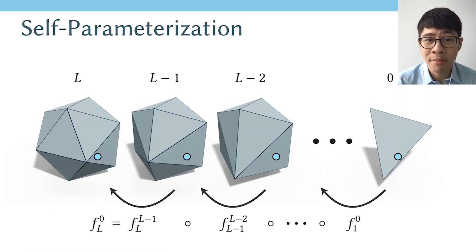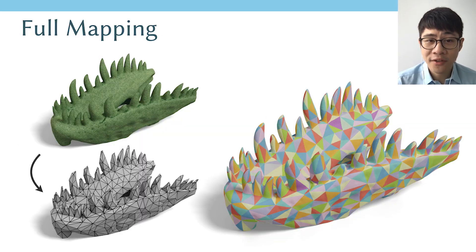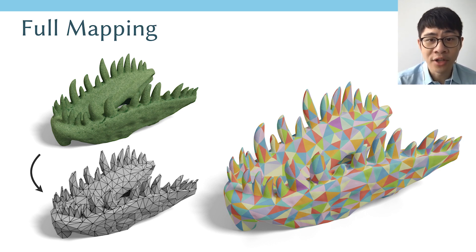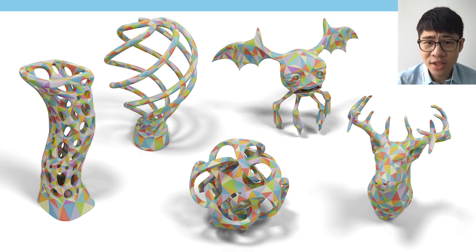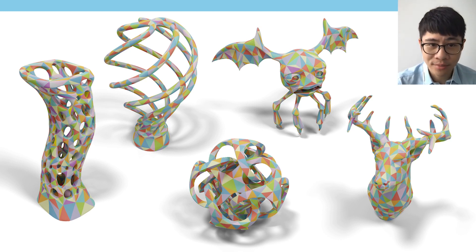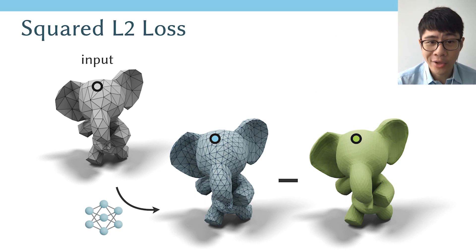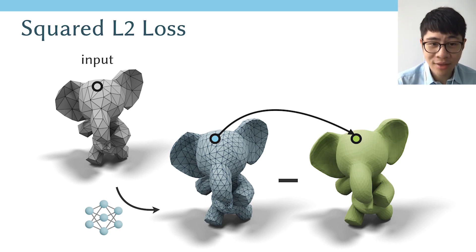This is how we compute the map before and after a single edge collapse, and we obtain the full map using composition. Here is the visualization: we decimate the green mesh down to the gray one, and visualize the triangulation of the gray mesh on top of the green one, using different colors to represent different triangles. This self-parameterization is just some additional steps on top of standard edge decimation, so we can handle meshes with complicated topologies or with thin and sharp features.